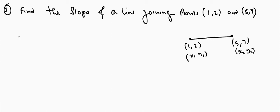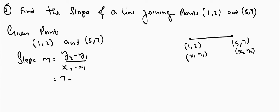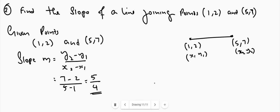Slope of a line joining the given points (1, 2) and (5, 7). The formula is m equals y2 minus y1 divided by x2 minus x1, which equals 7 minus 2 divided by 5 minus 1. We get 5 by 4, which is the slope of the line joining points (1, 2) and (5, 7). Next is question number 3.